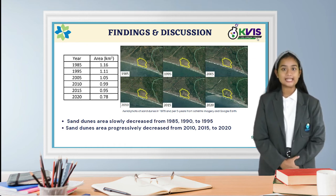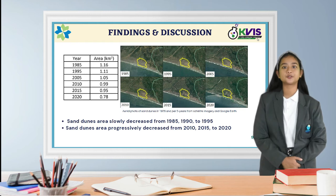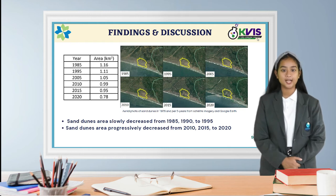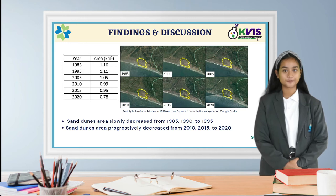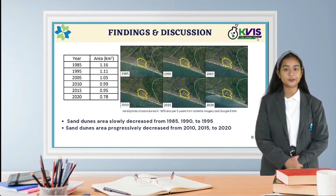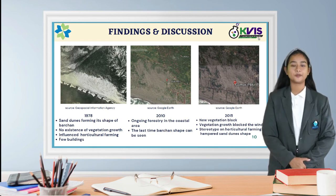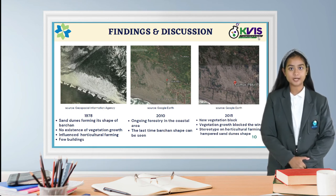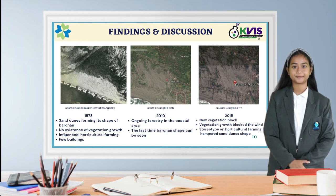For the last ten years, from 2010, 2015, to 2020, the sand dune area was progressively decreased. This proves that vegetation has affected the Parangtritis Sand Dune deformation. Let us tell you specifically about the sand dune's deformation before and after the plantation program.